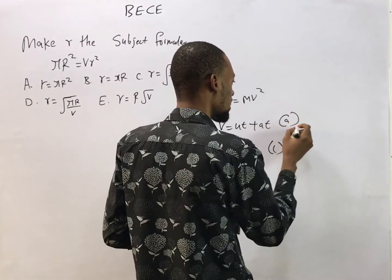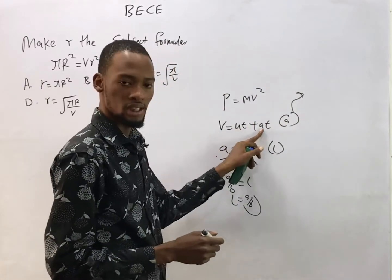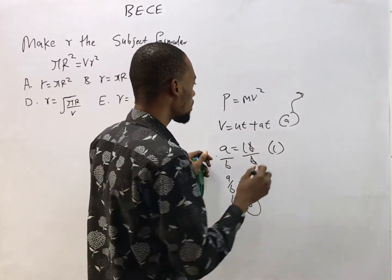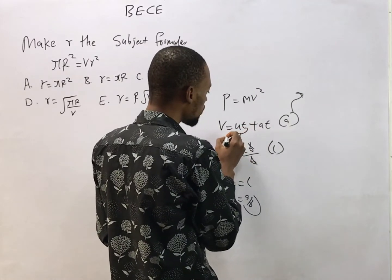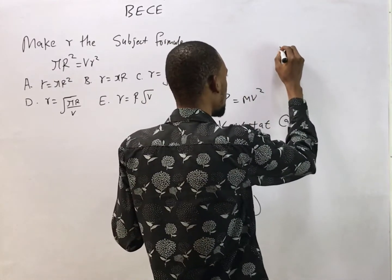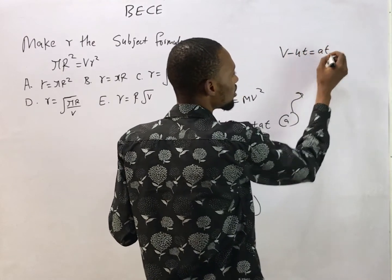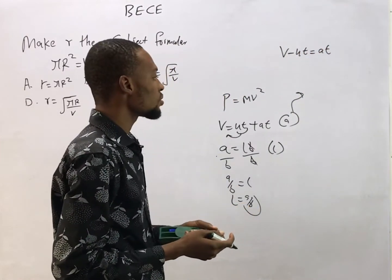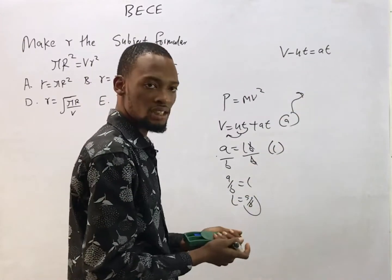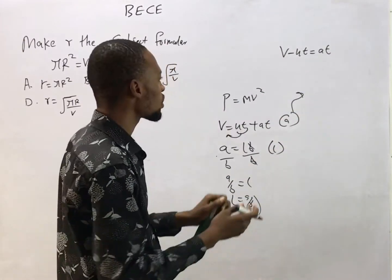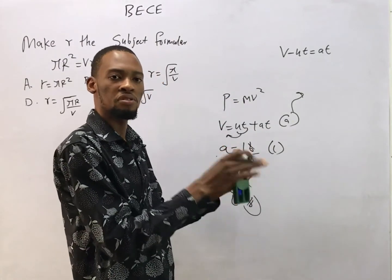Here we are making a the subject formula — I am changing from v to a. I can say: bringing ut to this side it becomes negative, so v minus ut equals at. Since I'm looking for a, let me divide both sides of the equation by t, because what happens to one side should happen to the other side to keep the equation balanced.